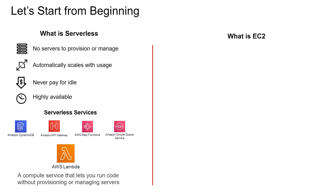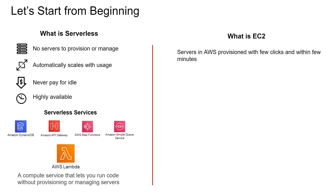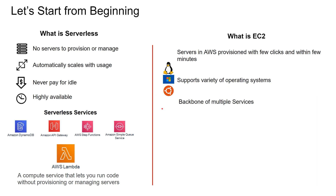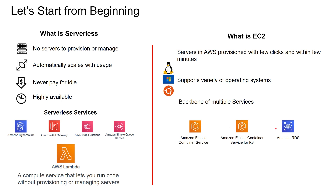AWS Lambda is a compute service that lets you run code without provisioning or managing servers. Now let's take a look at what EC2 is. EC2s are servers in AWS provisioned with a few clicks and within a few minutes. It supports a variety of operating systems, and EC2 is actually the backbone of multiple AWS services, such as Amazon Elastic Container Service, Amazon EKS, Amazon RDS, and many more. However, for this video, we are going to talk about vanilla Amazon EC2.